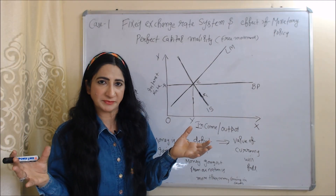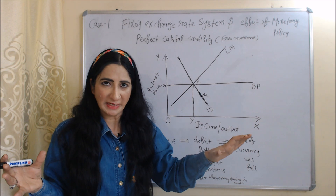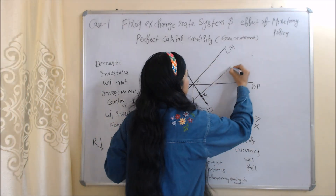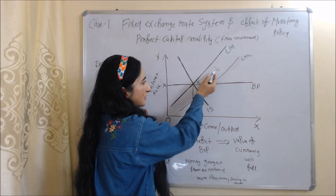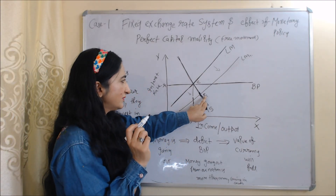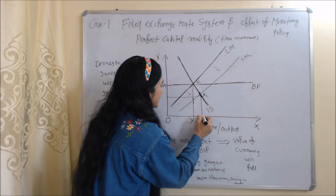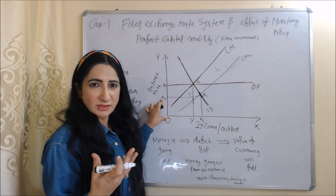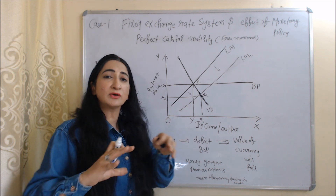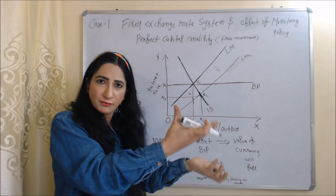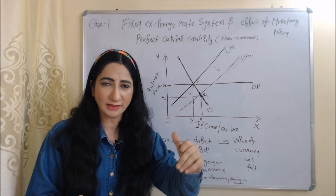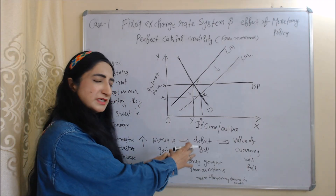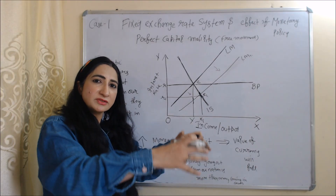Here we will see the effect of monetary policy. Under monetary policy, the central bank increases money supply, so our LM curve will shift from LM to LM1, and our new equilibrium point is E1. At this equilibrium point, you can see our interest rate falls from OR to OR1. Because the interest rate has fallen, domestic investors will not invest in our country — they will invest abroad. As domestic investors invest in foreign countries, our money is going out, and as a result, our balance of payment will become deficit. Deficit balance of payment means money going out from the nation is more than money coming in.